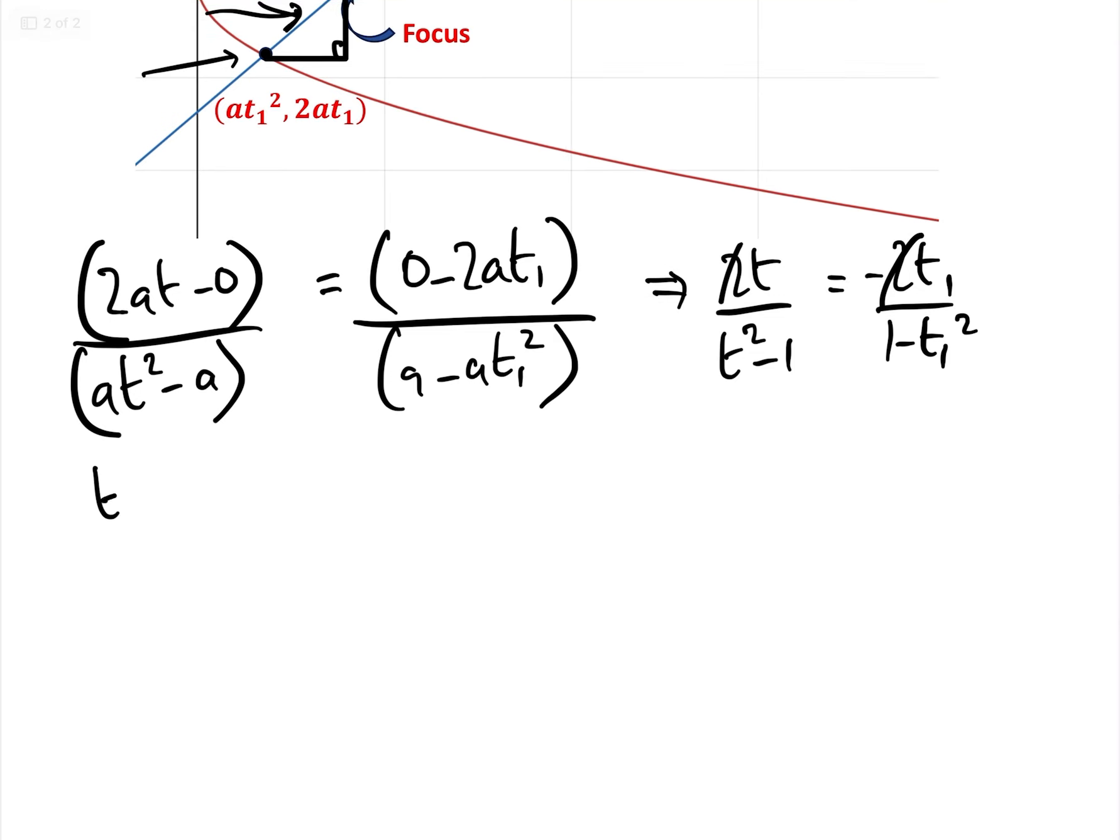So that implies that 2t over t squared minus 1 equals minus 2t1 over 1 minus t1 squared. Cancel out the 2. I'm carrying on a little bit. We get t minus tt1 squared equals minus t1t squared add t1, i.e. t minus t1 add t1t squared minus tt1 squared equals 0.